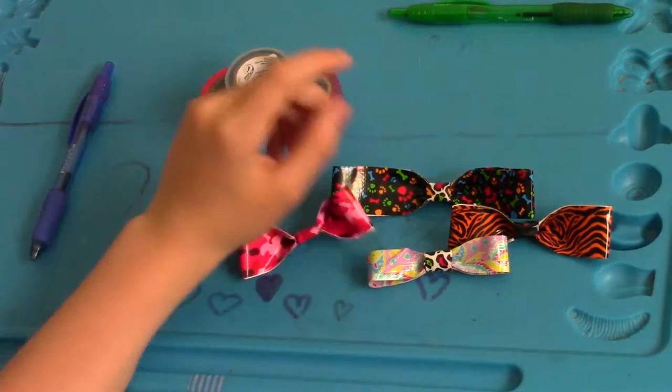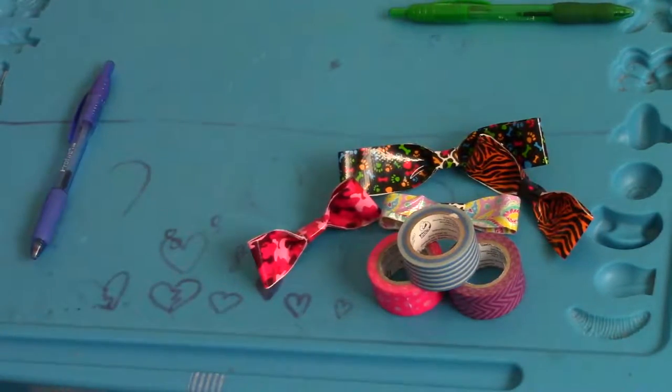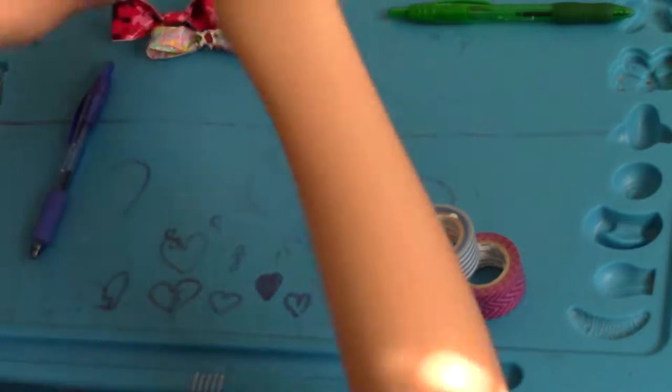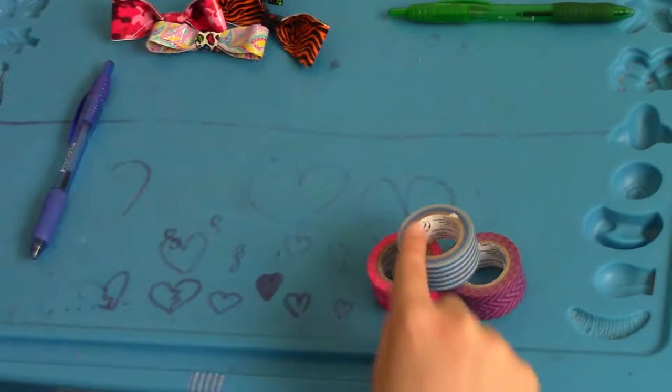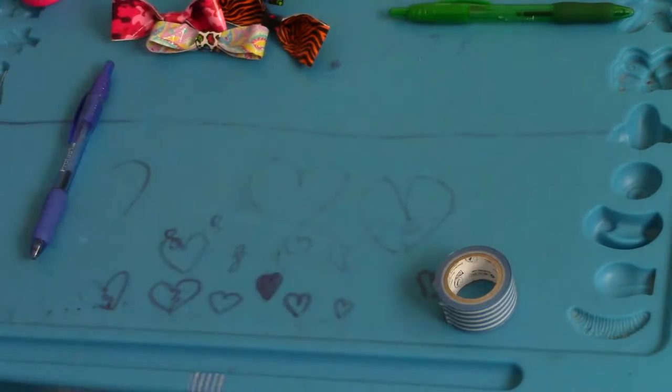So to make a duct tape bow, you will need duct tape, honestly. And you can make any type of duct tape, but I'm going to be using this blue and white duct tape. Put these off to the side.